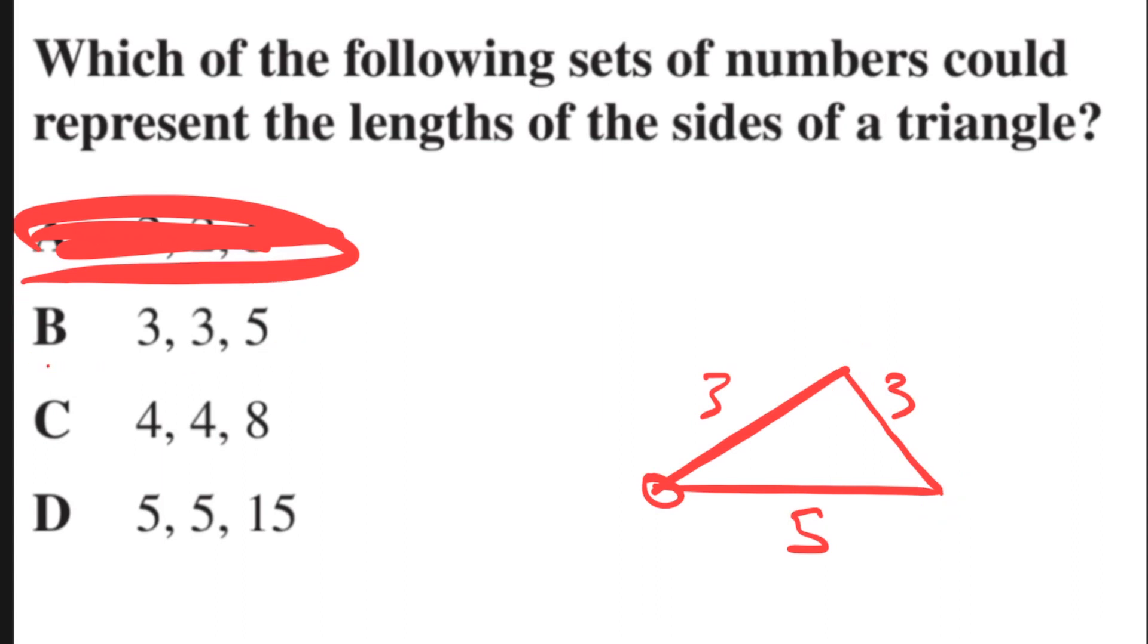Just for the heck of it, let's try C and D. C is 4, 4, and 8. That one is close, but it doesn't work because 4 plus 4 equals 8. And those two sides have to be greater than a third side. Not greater than or equal to. It has to be greater. 4 and 4 cannot be the length of two sides when the third side is 8. Therefore, C is out.